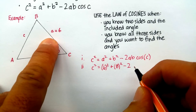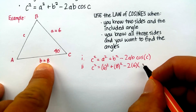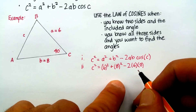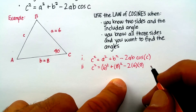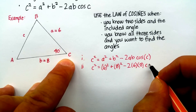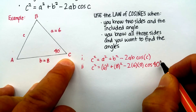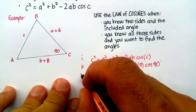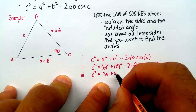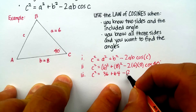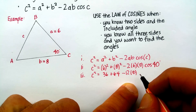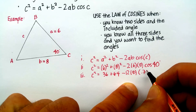Let's fill in what we know: a is 6 and b is 8. Notice I'm always putting whatever I replace a variable in parentheses — I would strongly suggest you do the same, it helps you keep track of calculations. The cosine of C means I put in 40 degrees, so I write cosine of 40 degrees. Now let's calculate: c squared equals 36 plus 64 minus 2 times 6 times 8 times cosine of 40 degrees. The cosine of 40 degrees is 0.766.